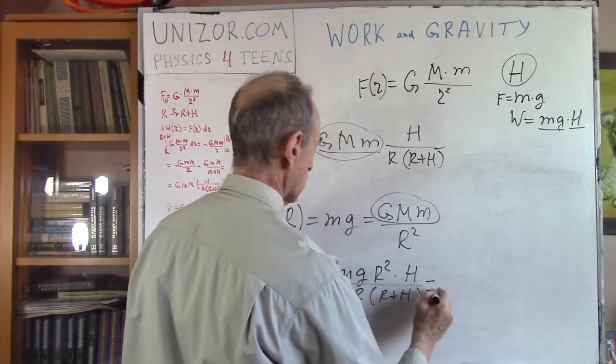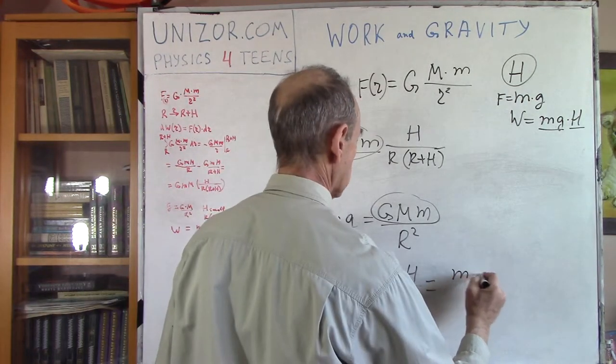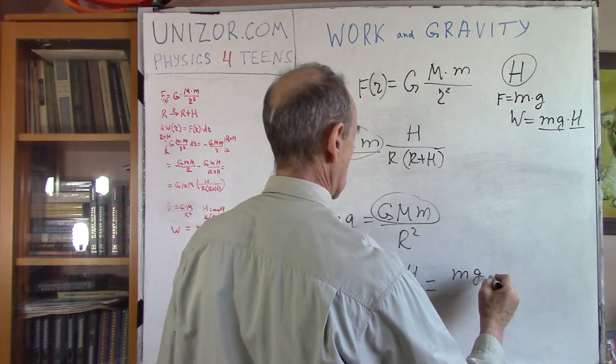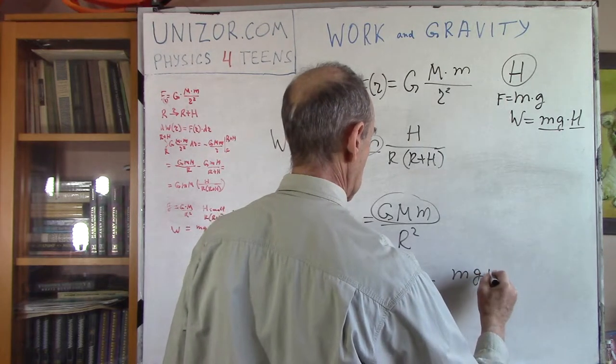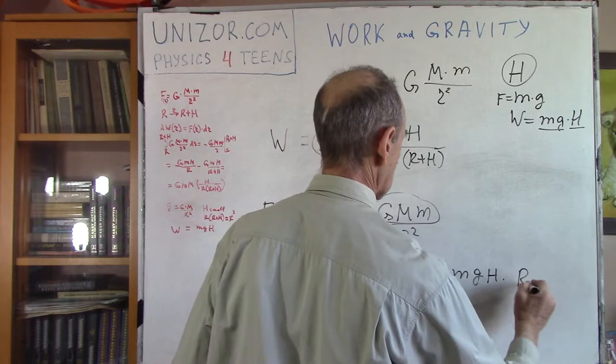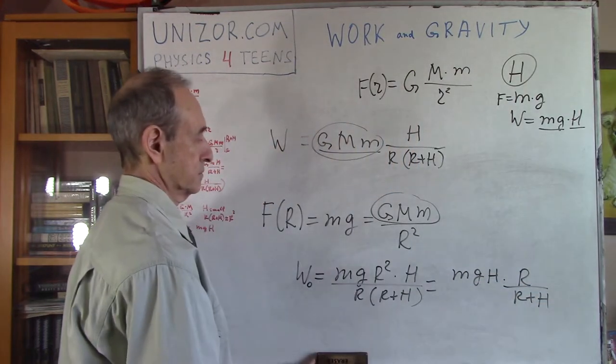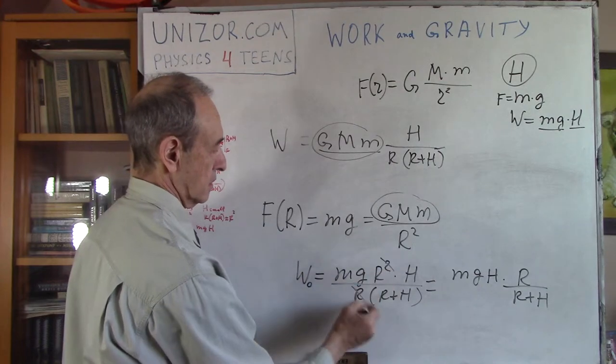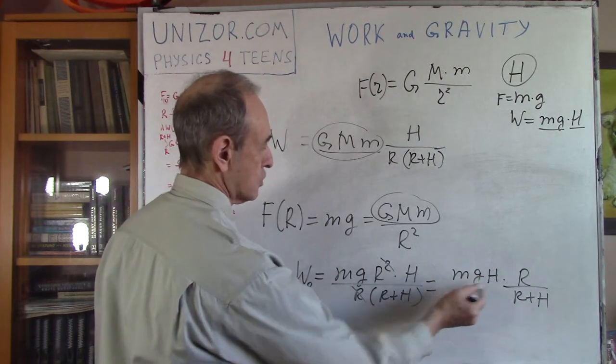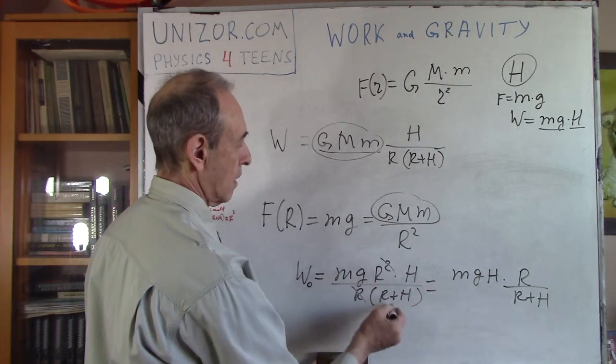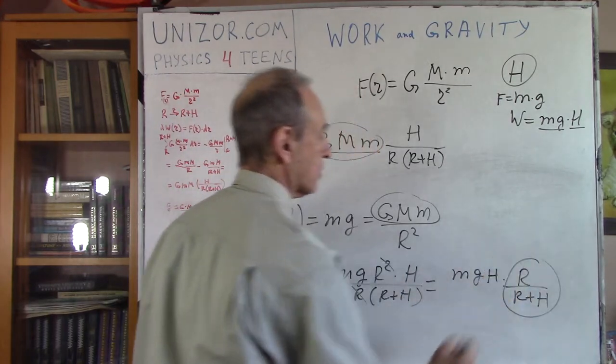Now, what is it equal to? It's equal to mg times h divided by r plus h times r, right? Now, r and r, so it's that h and another r. Now, let's talk about this one.